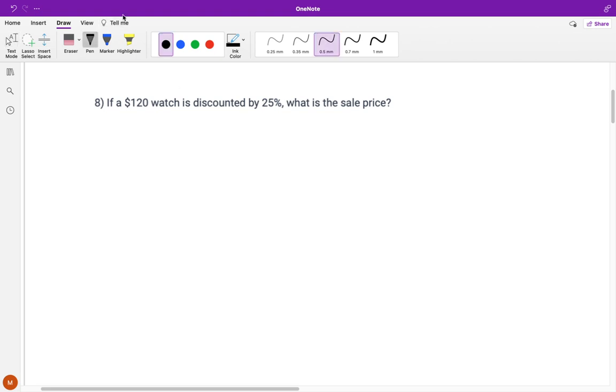But one of the things when you're doing this is first, you just need to make sure you're reading the question. If a $120 watch is discounted by 25%, what is the sale price? So you have to know what discounted means and if that's increasing or decreasing the cost. And that's really important. When something is discounted, it's being decreased.